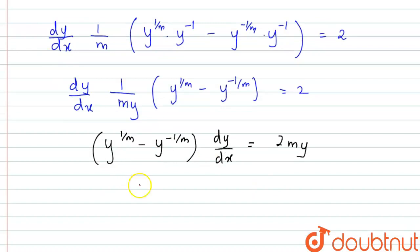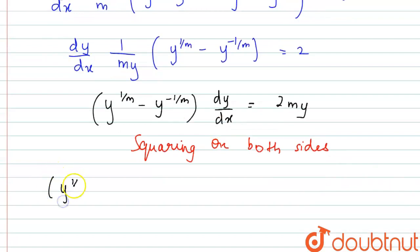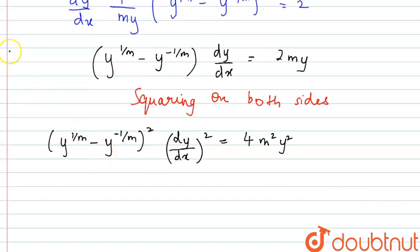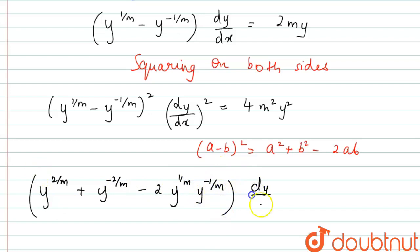Now we will square both sides. Upon squaring, the left side becomes (y^(1/m) − y^(−1/m))² into (dy/dx)², equal to 4m²y². This is of the form (a − b)², so we apply the identity a² + b² − 2ab. Expanding: y^(2/m) + y^(−2/m) − 2·y^(1/m)·y^(−1/m) into (dy/dx)² = 4m²y².